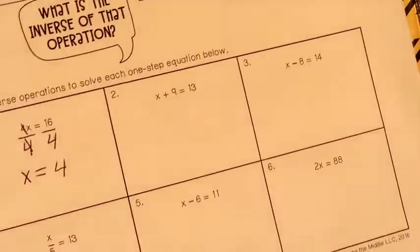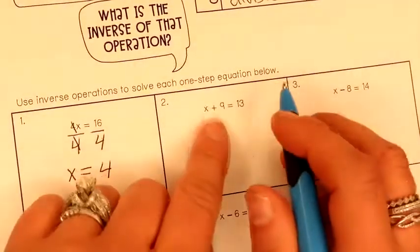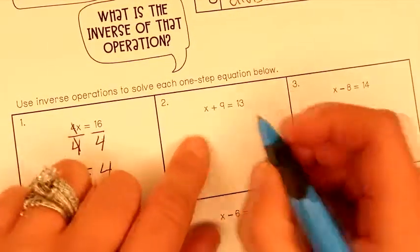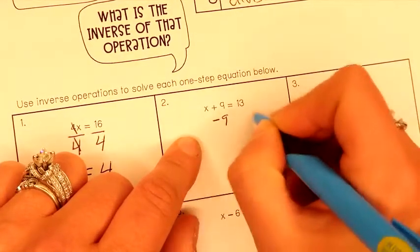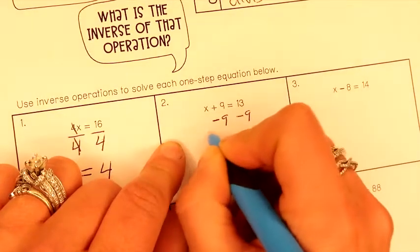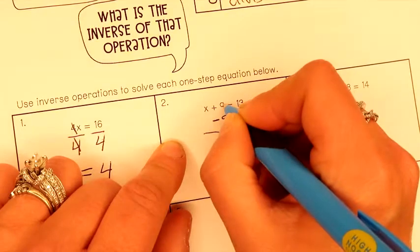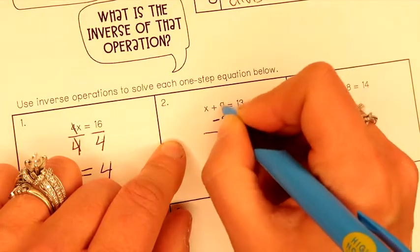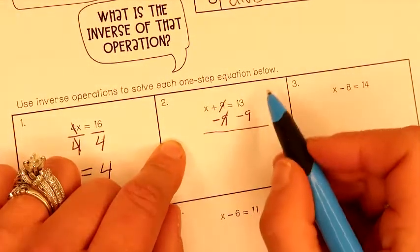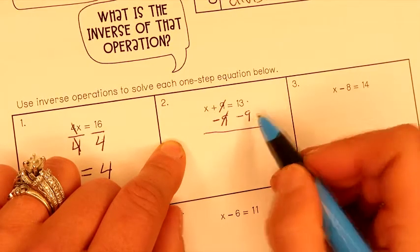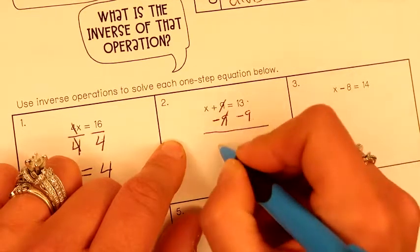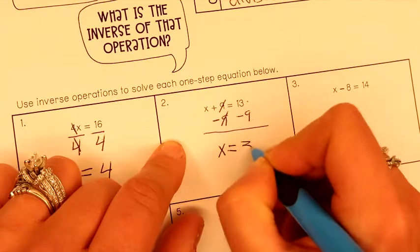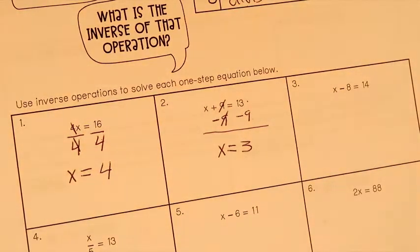Here's an easier one. X plus 9 equals 13. If we're adding 9, we're really going to subtract 9. Minus 9, minus 9. Just going to draw my line. Not plus 9, minus 9, we cancel each other out. 13 take away 9 is 3. X equals 3. You guys see that? X equals 3, because we got rid of the 9 by subtracting 9.